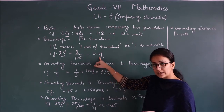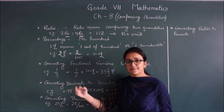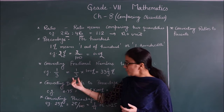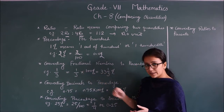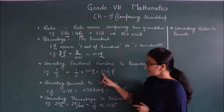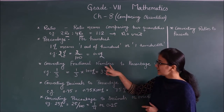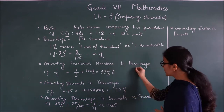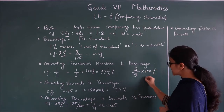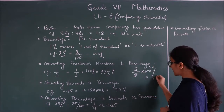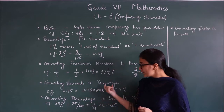Converting fractional numbers to percentage: if you have a fraction like 1/3, 2/5, 7/9, multiply it by 100%. So 1/3 × 100 = 100/3 = 33.33%. For example, 2/5 × 100% = 200/5 = 40%. So 2/5 means 40%.